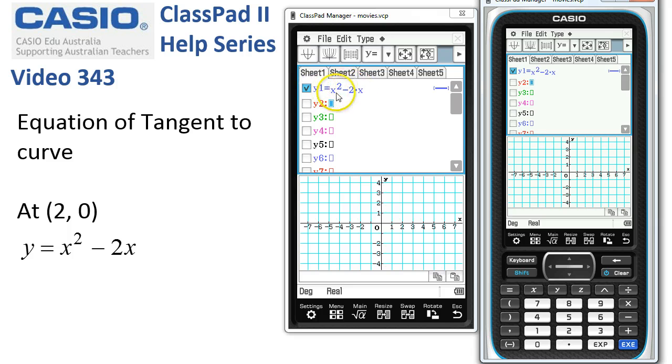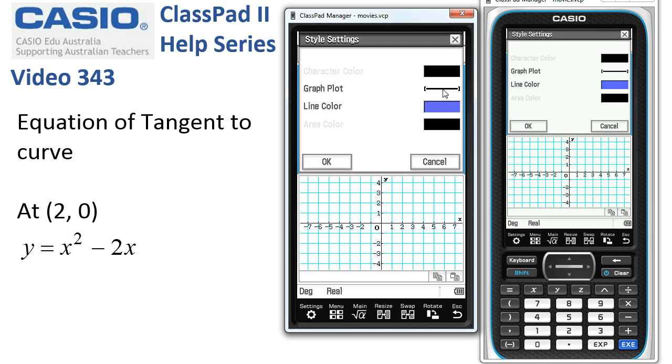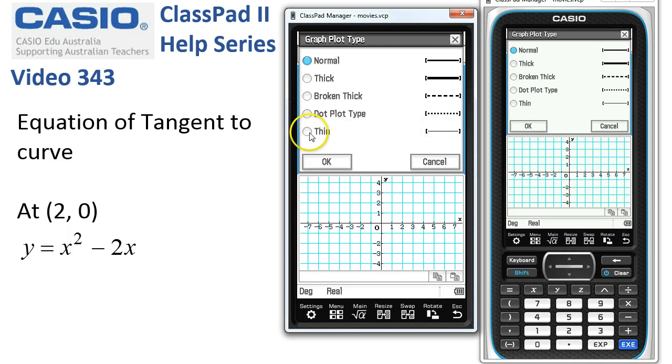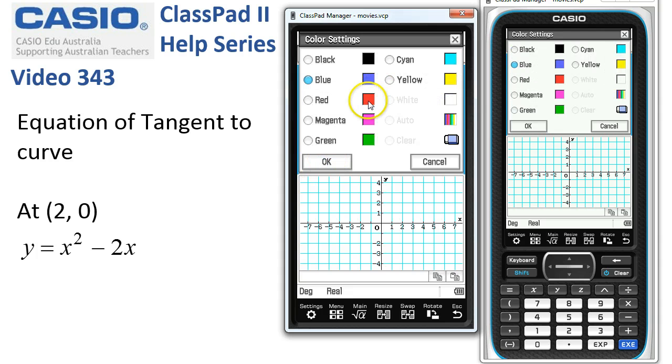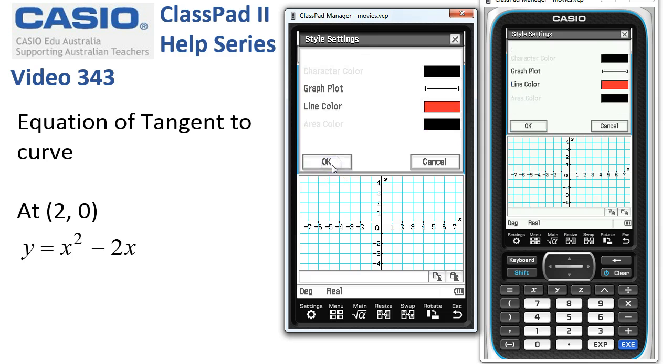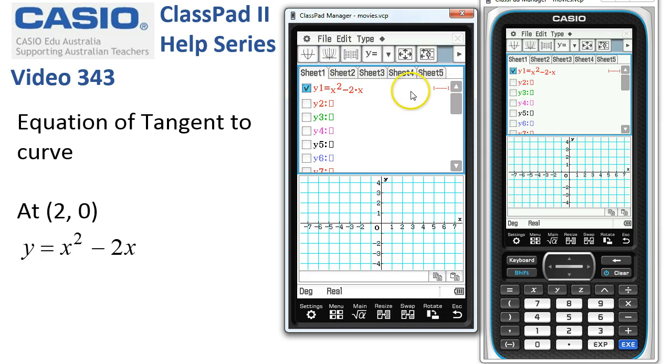We could change some of the graph settings. We could tap here and maybe go for a thinner line. And maybe we want to do this one in red. So, OK. So we're ready to go.